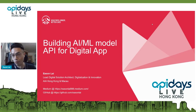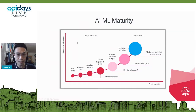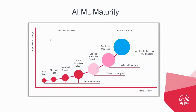Before I share more about how we build, let me cover the AI and ML maturity model — why we need to build AI and machine learning model APIs. Nowadays, for predictions and scoring, we always talk about machine learning and artificial intelligence, so we need to build endpoints to serve our customers or internal users.